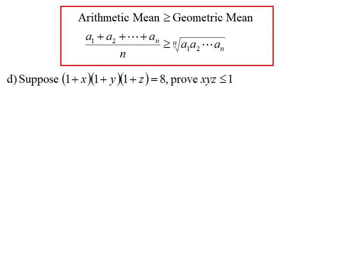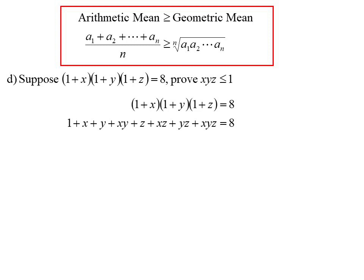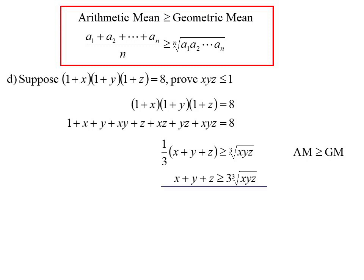Suppose that (1 plus X)(1 plus Y)(1 plus Z) equals 8. Prove that XYZ is less than or equal to 1. We'll do it two ways — the first is very creative. Expanding (1+X)(1+Y)(1+Z) gives 1 plus X plus Y plus Z plus XY plus XZ plus YZ plus XYZ. We know (X plus Y plus Z)/3 ≥ cube root of XYZ by AM-GM, so X plus Y plus Z ≥ 3 times the cube root of XYZ. We can also substitute XY, YZ, XZ for the three terms, giving another valid inequality involving the cube root of (XYZ) squared.